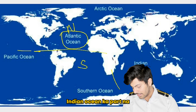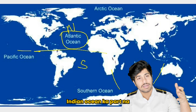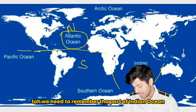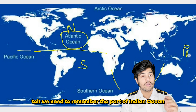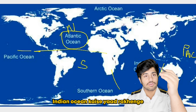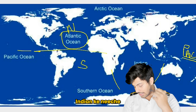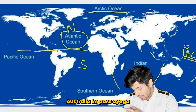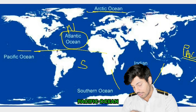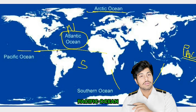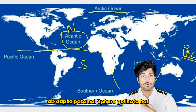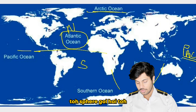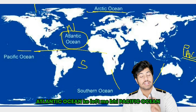Indian Ocean's position is called V. We need to remember the part of Indian Ocean — how do we remember the part of India? On the right side, Australia will be Pacific Ocean. Now you know that this sphere is a globe, so it's a sphere goal.